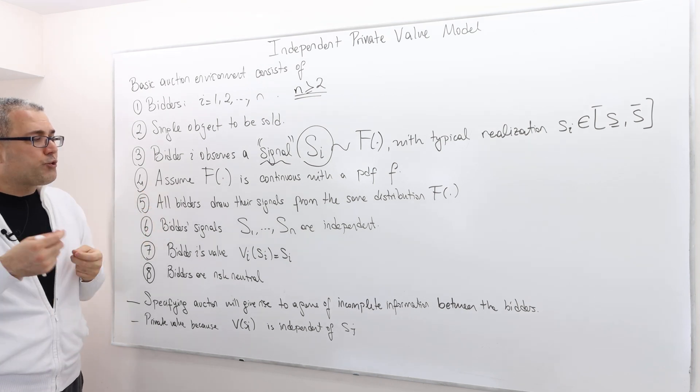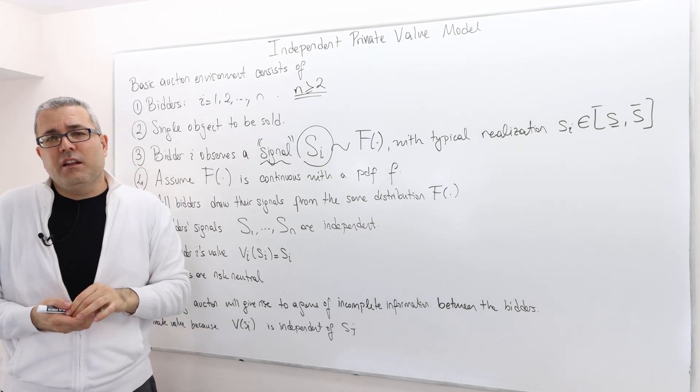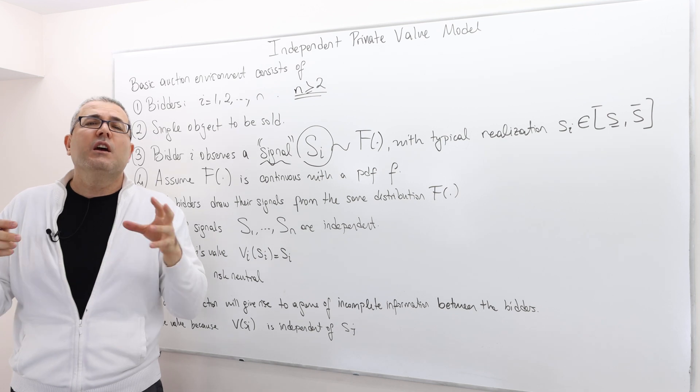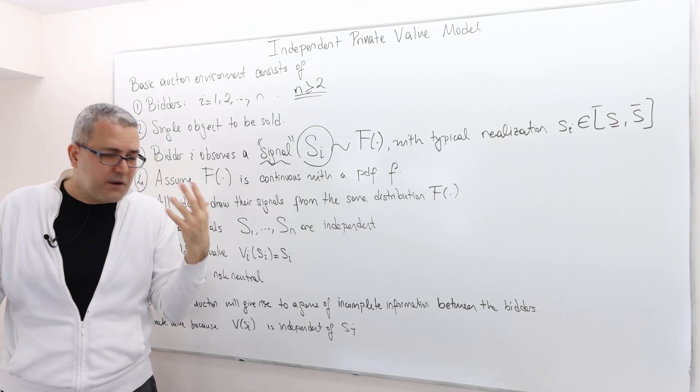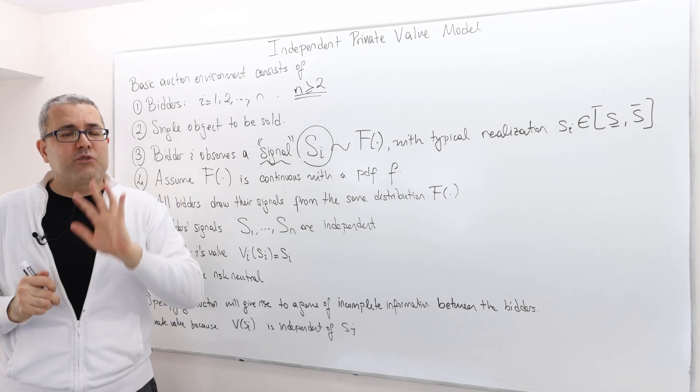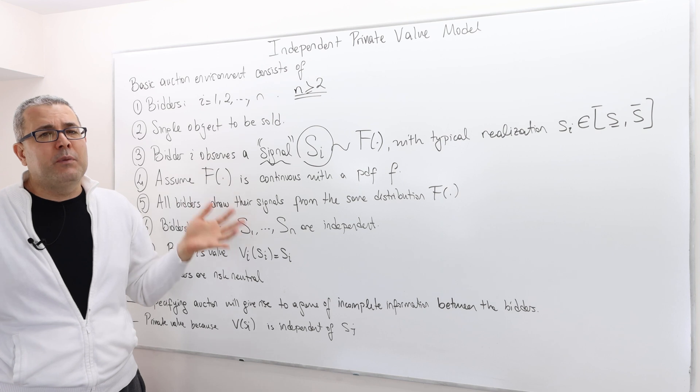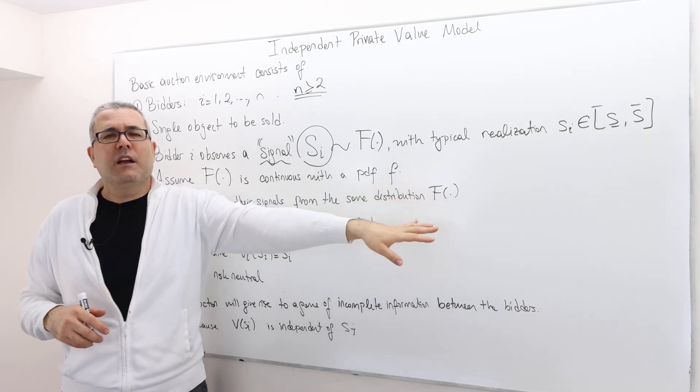All bidders draw their signals from the same distribution function. In reality, different people can actually be receiving different signals which are generated from a different probability distribution function, which is possible. But trust me, theoretically, it makes everything much easier when everybody receives their signals from the same distribution function.